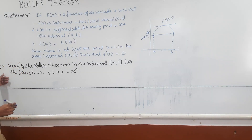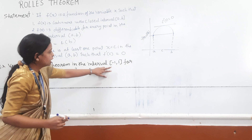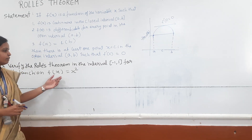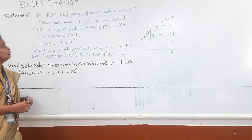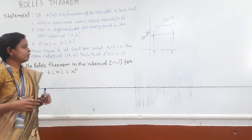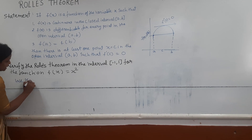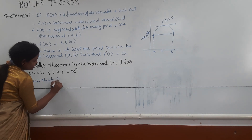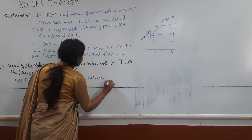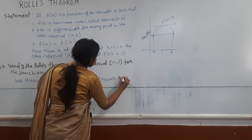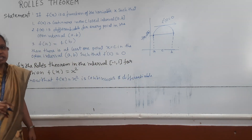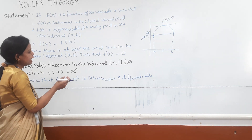Let us see an example of Rolle's theorem on the interval [-1, 1] for the function f(x) = x². We know that every polynomial function is continuous and differentiable, so our function f(x) is both continuous and differentiable.